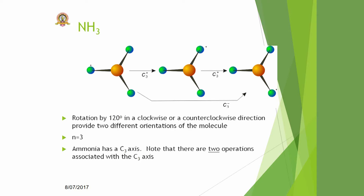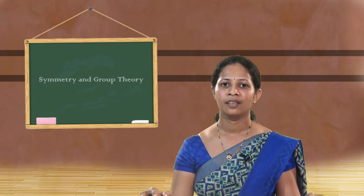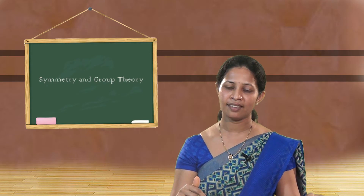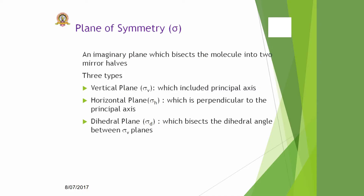Another example is the ammonia molecule. It has four atoms: nitrogen is in the center with three hydrogen atoms. If we pass an axis through the nitrogen atom, rotation by 120 degrees gives an indistinguishable configuration. So N = 360 / 120 = 3, meaning ammonia has a C3 axis of symmetry.